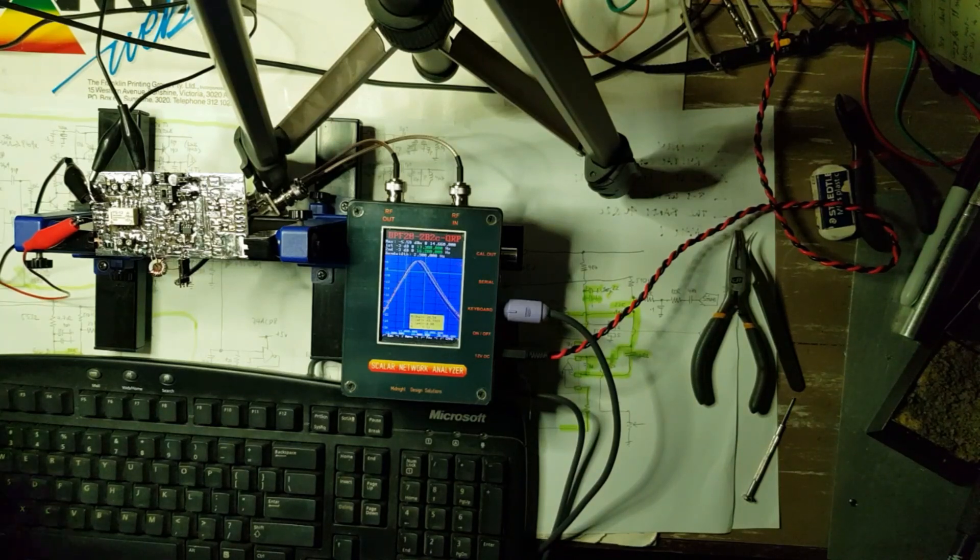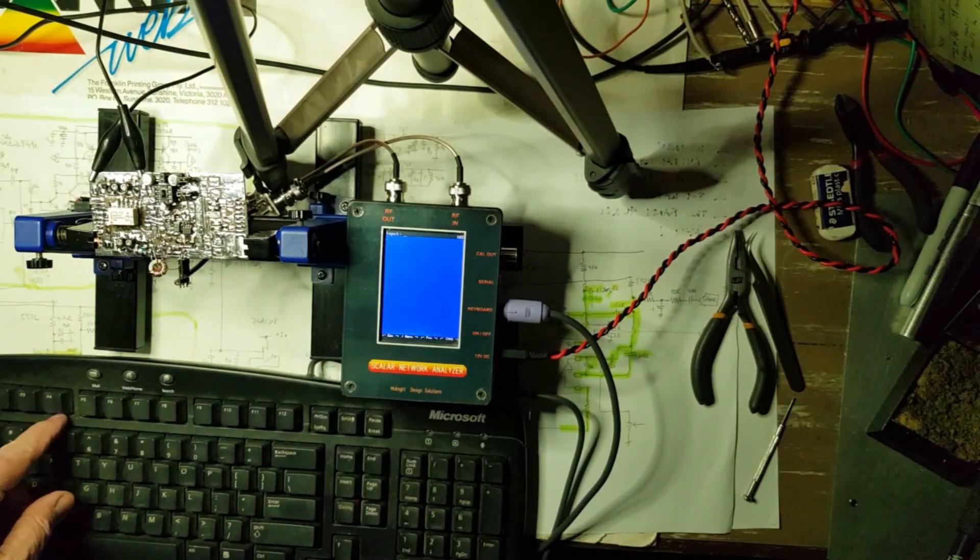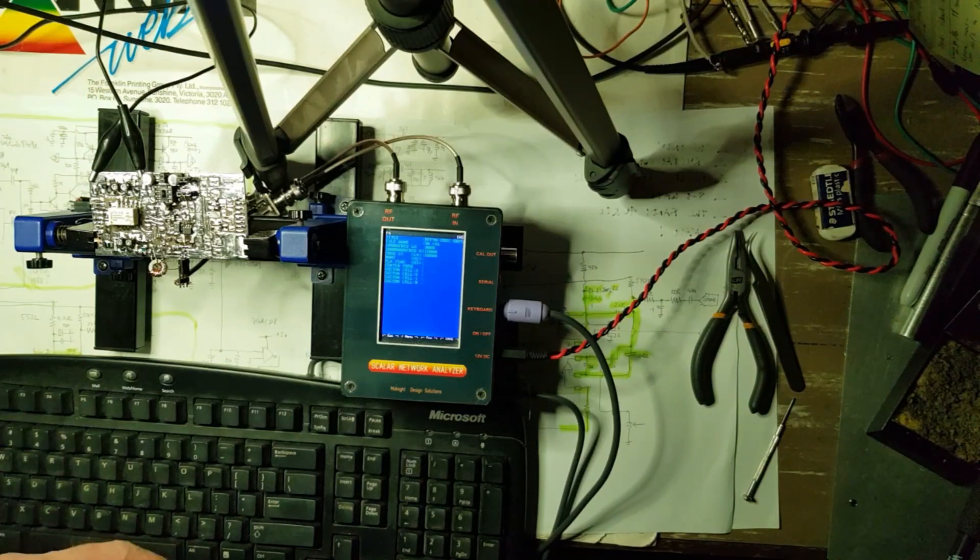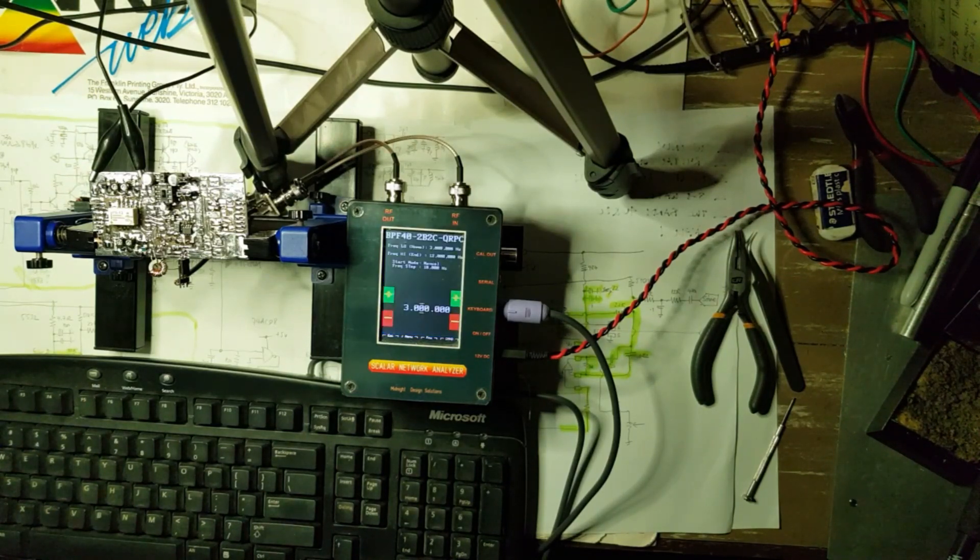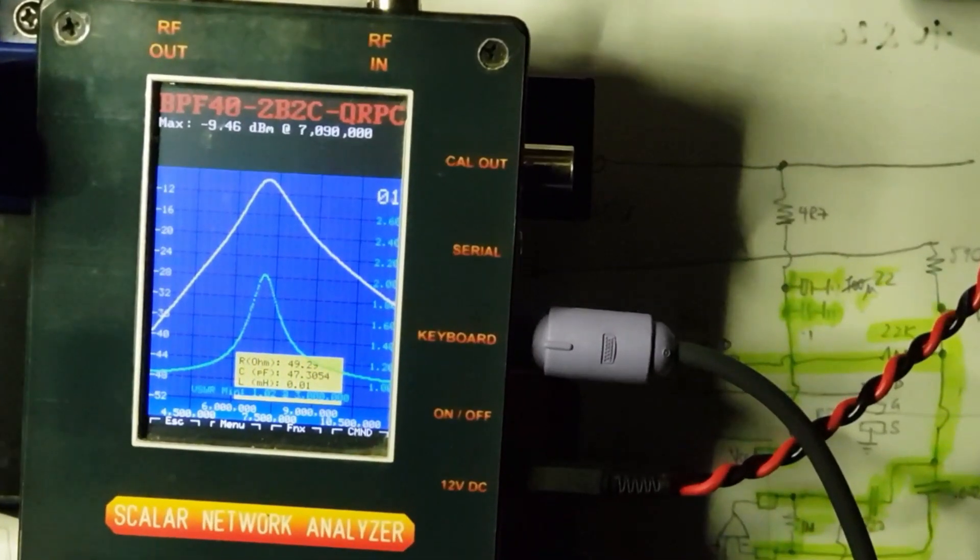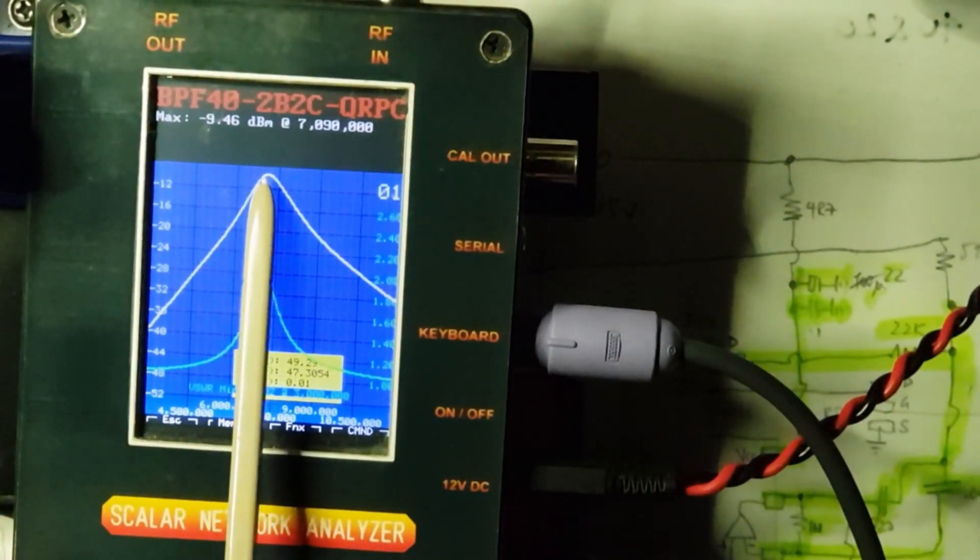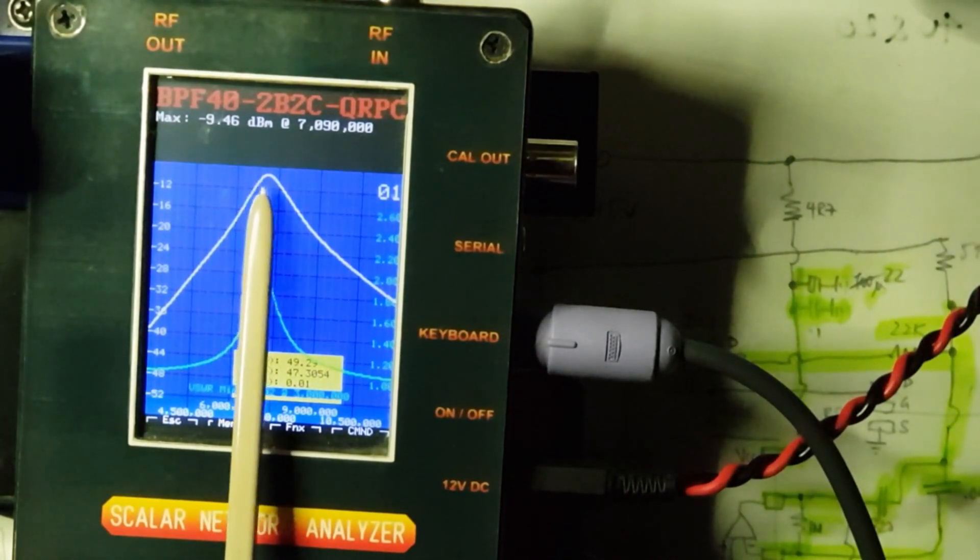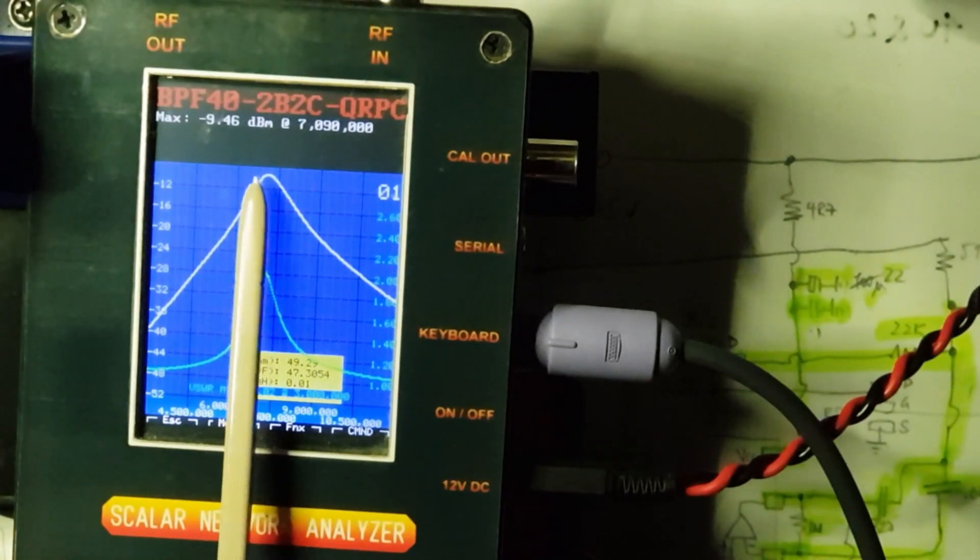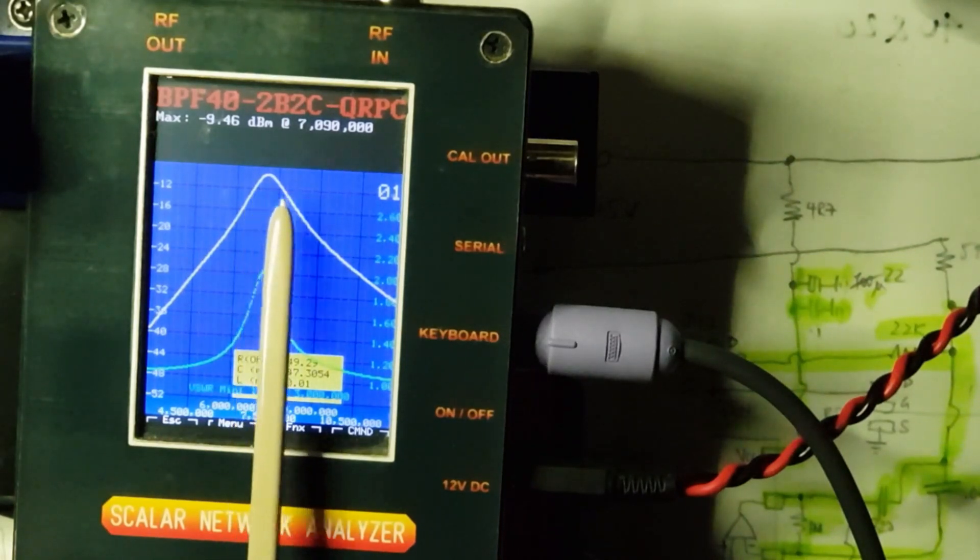So that's the 20 meter bandpass filter done. So now the 40 meter bandpass filter is in circuit. So now I have a second script. And this one sweeps from, I think it's 3 megahertz to 12 megahertz. And this is showing peak of the bandpass filter, the 40 meter bandpass filter at 7090 kilohertz. And it's showing minus 9.4 dB of insertion loss, which is really quite a lot.